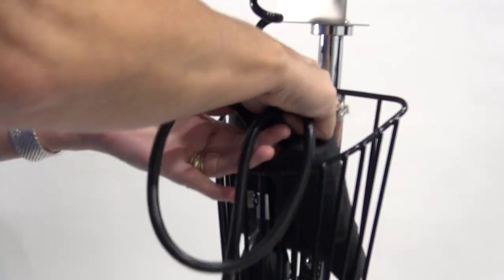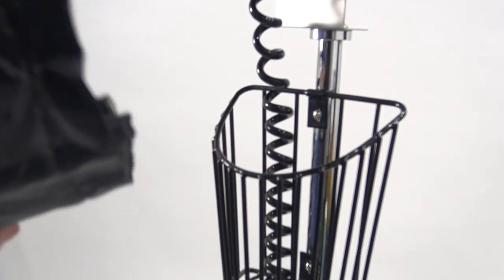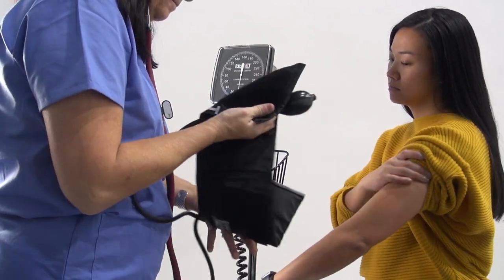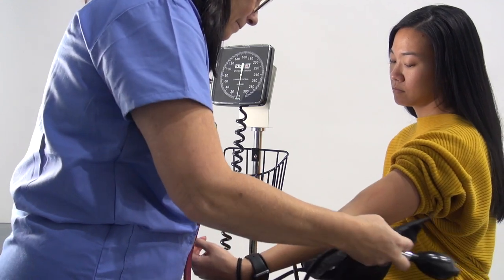The storage basket is included, providing a storage space for the AccuMax nylon cuff and 8 foot coiled tubing.